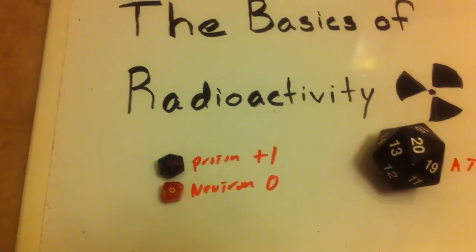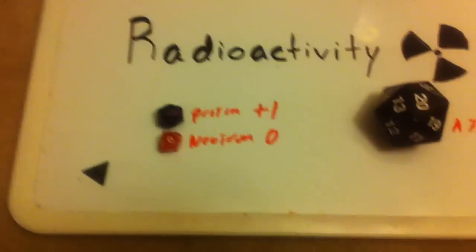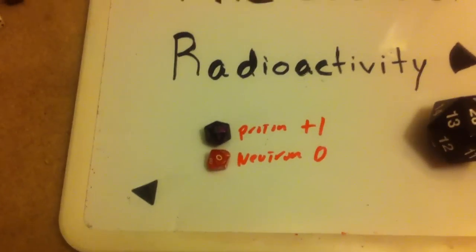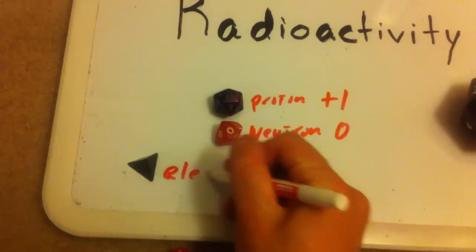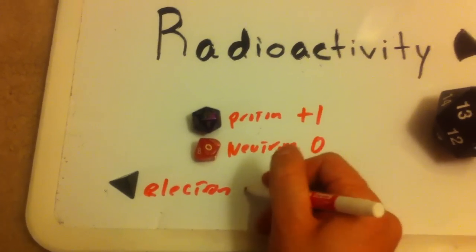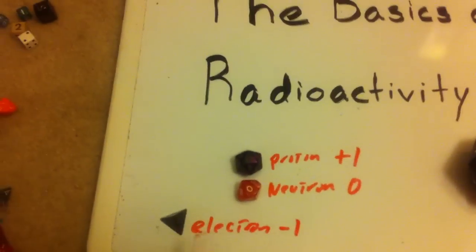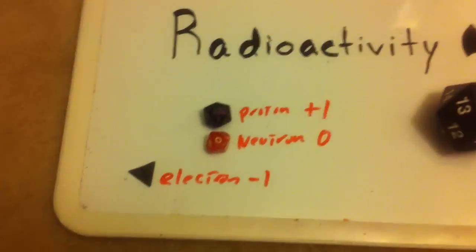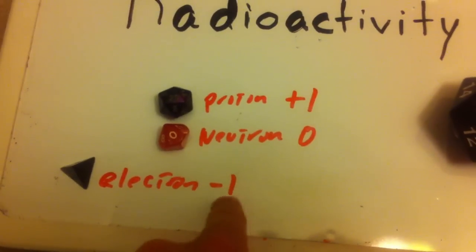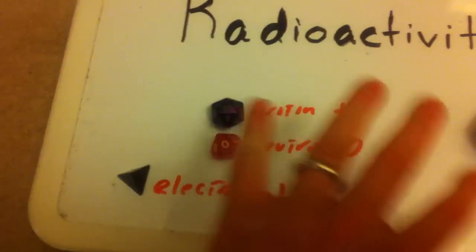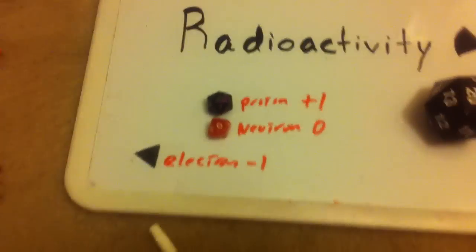The electromagnetic force is characterized by these little guys called electrons. That is an electron, and it has a negative one charge. So our little atom has a positive, a zero, and a negative. When you add these all together they equal zero. So this is an electrical equilibrium — nice and steady.